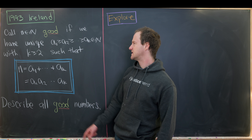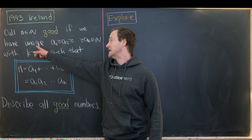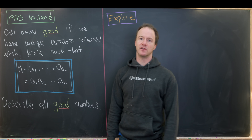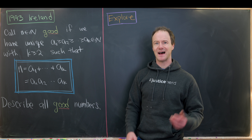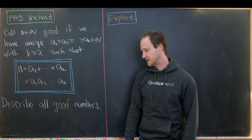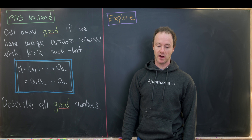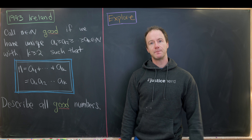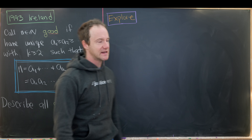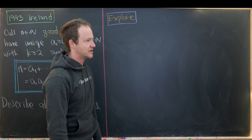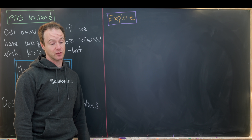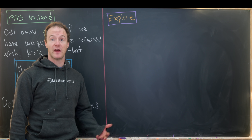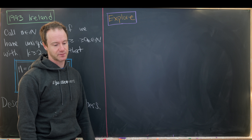As we'll see, the uniqueness condition is really what decides whether a number is good or not. Let's get into some exploration so we can make a conjecture, which we will then prove and thus solve the problem.